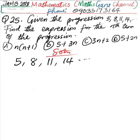The first thing we are going to do here is to know whether this is arithmetic progression or a geometric progression. If it is an arithmetic progression, the difference between the successive terms should be equal. 8 minus 5 is equal to 3, 11 minus 8 is equal to 3, 14 minus 11 is equal to 3. Therefore, it's an arithmetic progression.